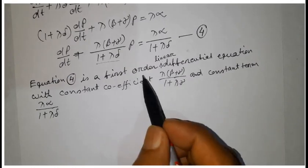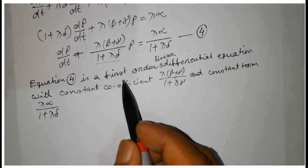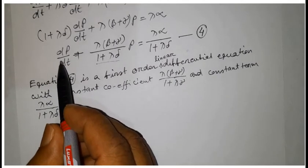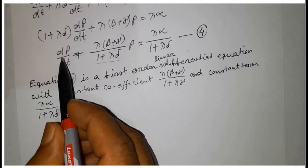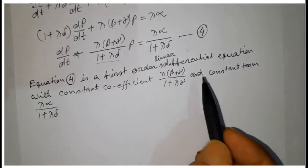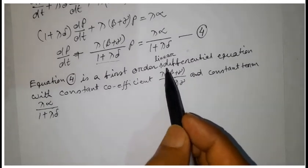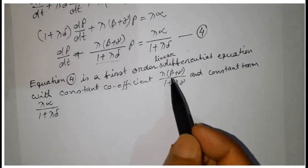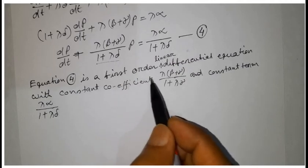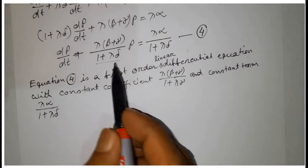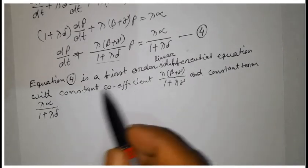It is first order because the derivative is of first order — that is, the equation has a first-order derivative term. It is linear because the degree of the derivative term is 1. So it is a first-order linear differential equation with constant coefficient a and constant term b.